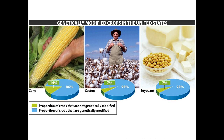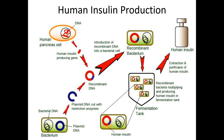Genetically modified crops are very widespread in the United States, especially for the top three crops. Over 80% of corn, cotton, and soybeans grown in the US are genetically modified. It's been massively and widely adopted, and there's a lot of controversy that surrounds this.